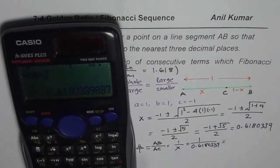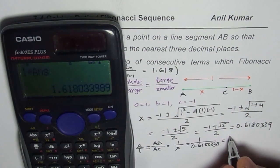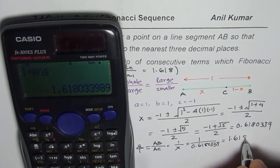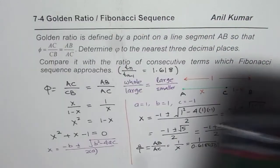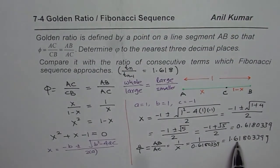1 over 0.6180339 is equal to how much? So, we already have the answer with us. We will do 1 divided by answer equals 2. Decimal value, it is equal to 1.61803399. So, that is the value of golden ratio, 1.6180.